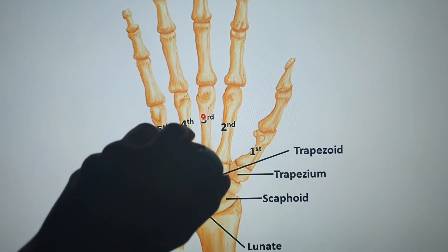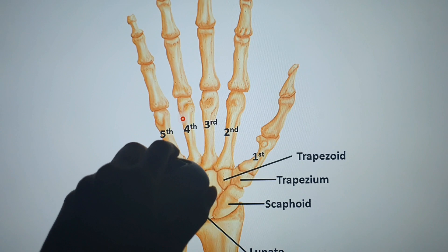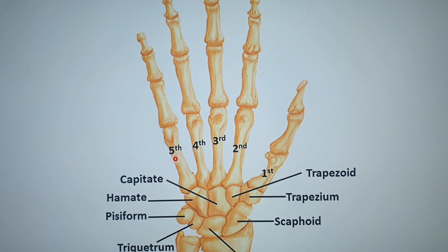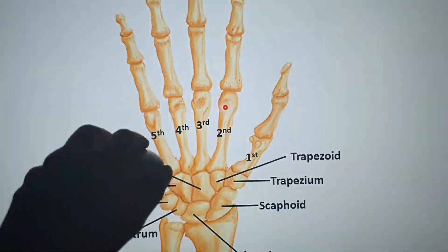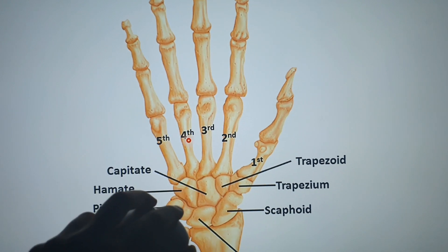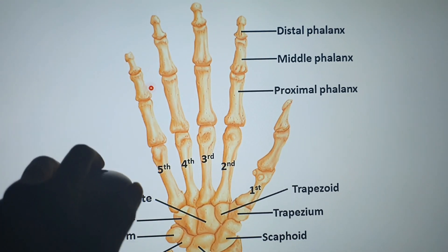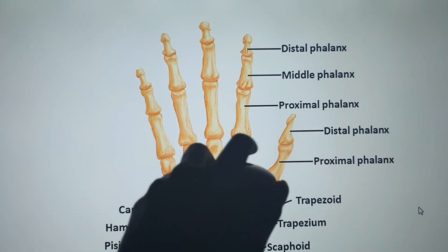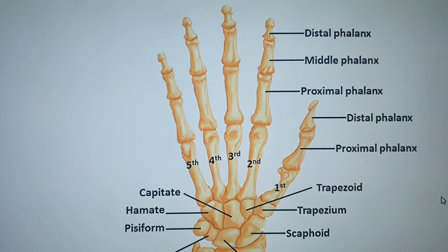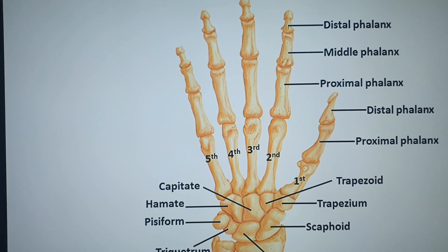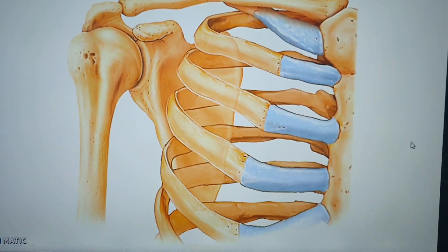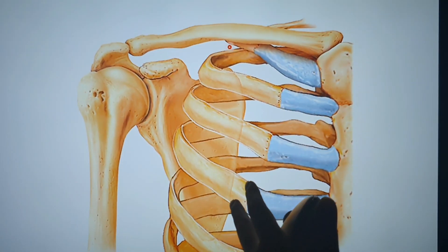We have five metacarpals, numbered one through five — the fourth and the fifth. The phalanges consist of a proximal, a middle, and a distal phalanx for each finger. For the thumb we have only the proximal and distal phalanx. This is the metacarpal and carpal region.